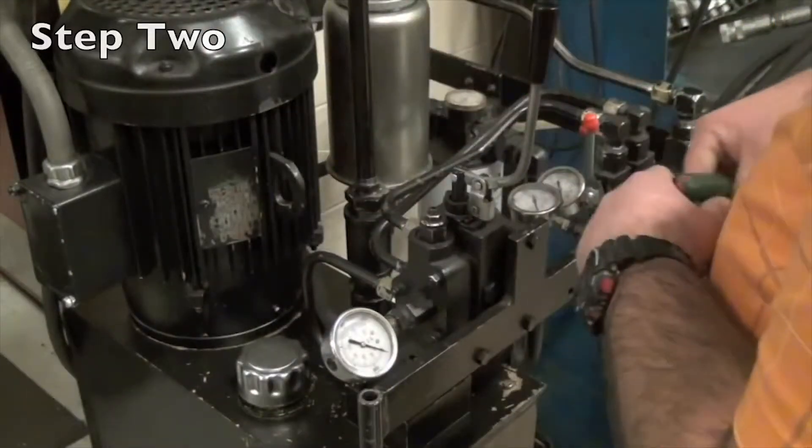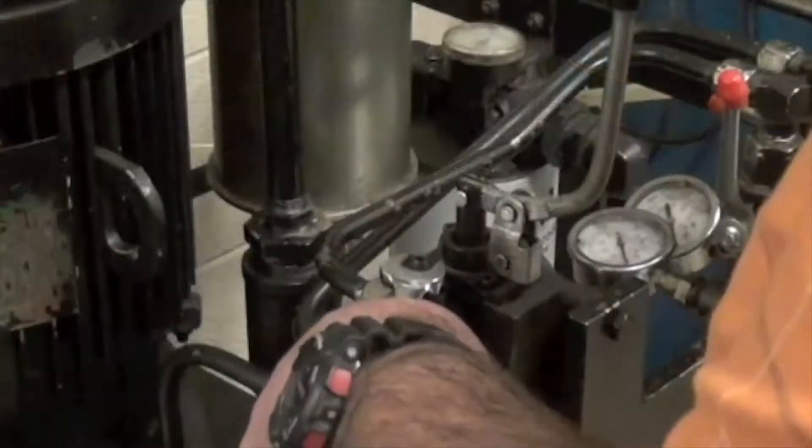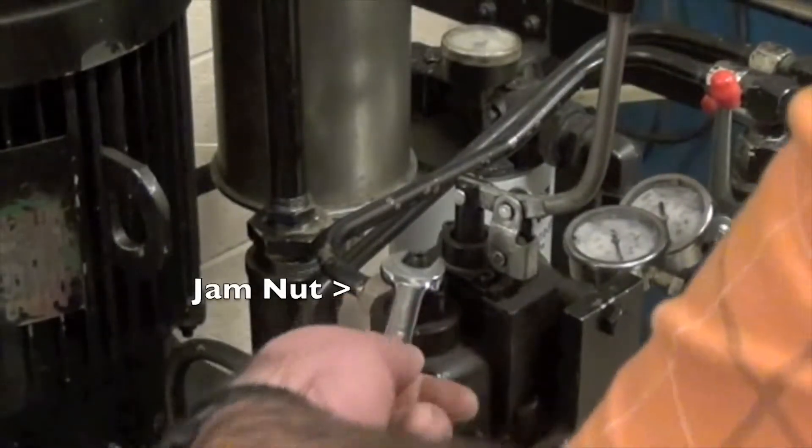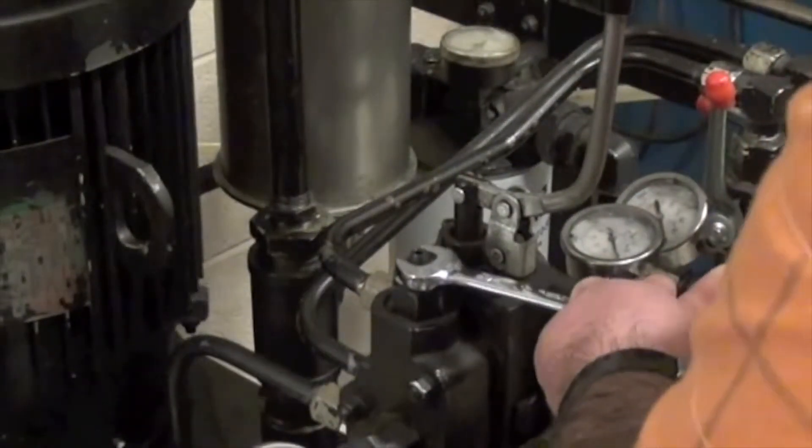Step 2. Turn off your system or make sure there is no pressure within the system. Then loosen your jam nut, also known as a lock nut.